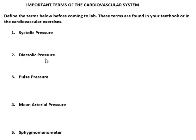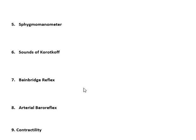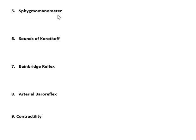Vocabulary: systolic pressure, diastolic pressure, pulse pressure (systolic minus diastolic), and mean arterial pressure. MAP is not divided by two — you take the pulse pressure, divide by three, and add it back to the diastolic. You also need to be able to pronounce and spell sphygmomanometer — it contains a 'ph' that sounds like an 'f': sphygmomanometer.